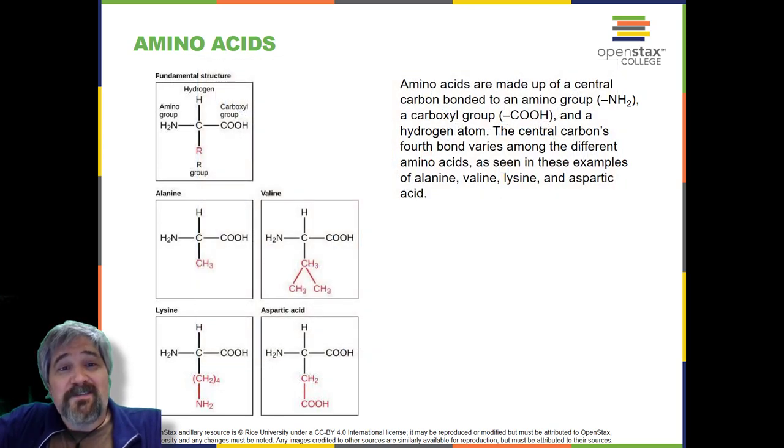The products formed by such a linkage are called polypeptides. While the term polypeptide and protein are sometimes used interchangeably, a polypeptide is technically a polymer of amino acids, whereas the term protein is used for a polypeptide or polypeptides that have combined together, have a distinct shape, and have a unique function. Oh, here, I might as well read this little inset box. Evolution in action. The evolutionary significance of cytochrome C.